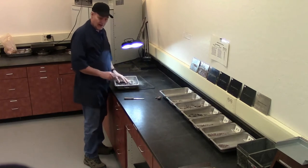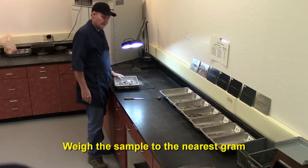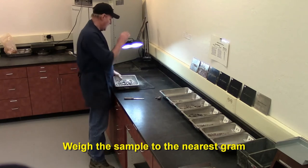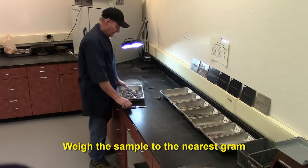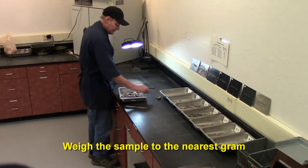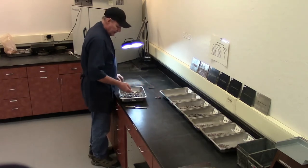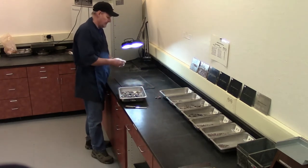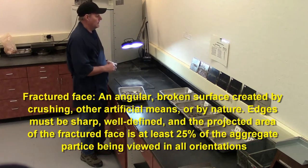First thing you're going to do is weigh the sample to the nearest one gram. Then under a magnifying glass with adequate light, you're going to check each piece to determine if it's fractured.